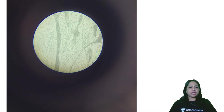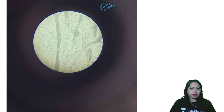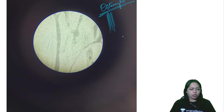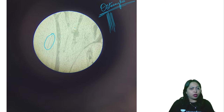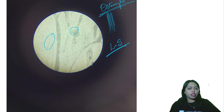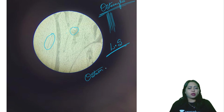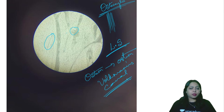The next slide shows many osteocytes, but the cut section is longitudinal — not transverse. Between the osteons you can see connections. These connections between one osteon and another are called Volkmann's canals.